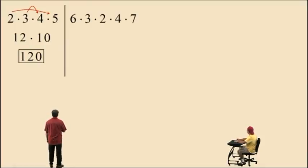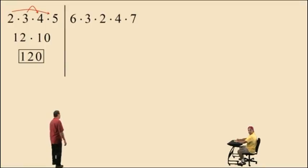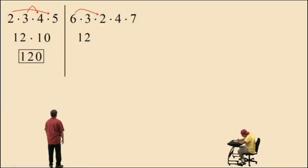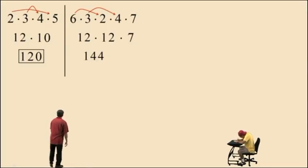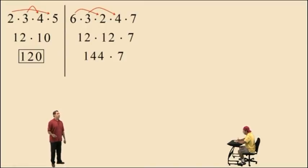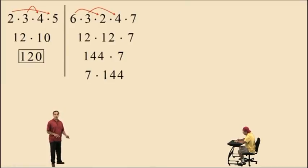Now we have 6 times 3 times 2 times 4 times 7 — don't get scared, we're going to use some kung fu. Let's try 6 times 2, which is 12. Then 3 times 4, which is 12. We still have a 7. Well, 12 times 12 is 144. Bring down the 7 — now we have to do 144 times 7. By the commutative property, 144 times 7 is the same as 7 times 144.